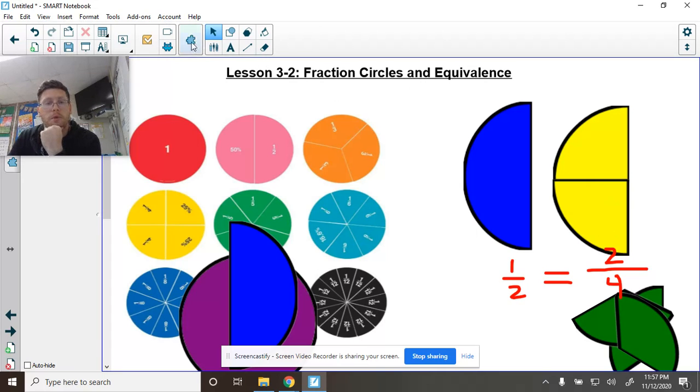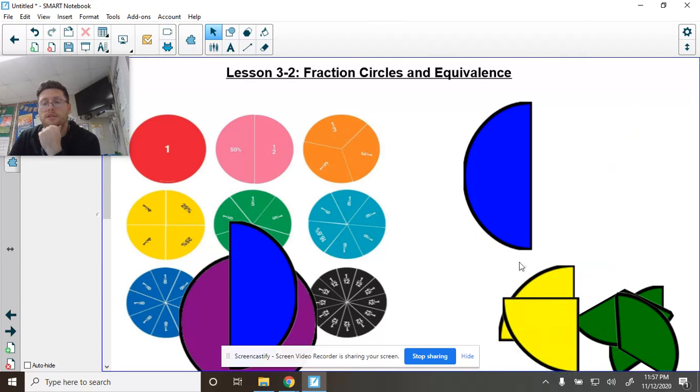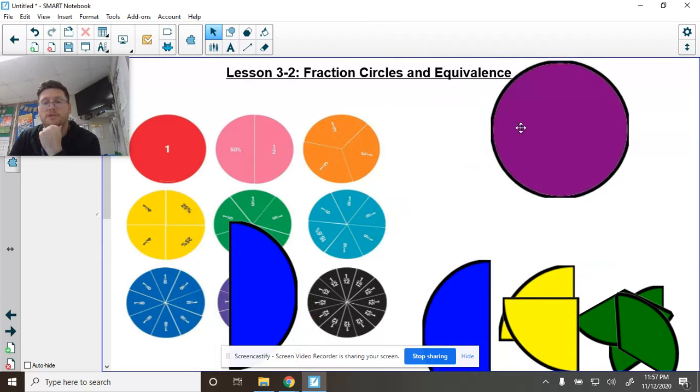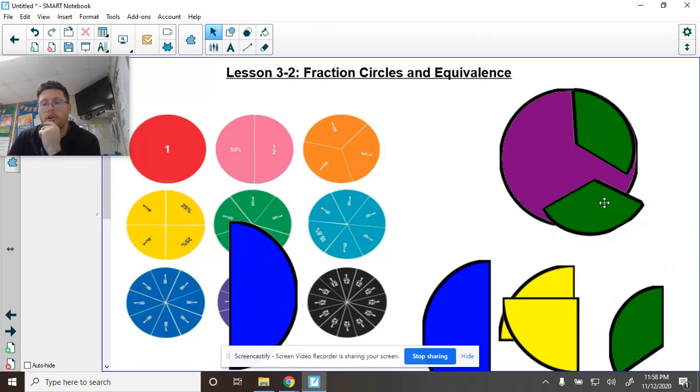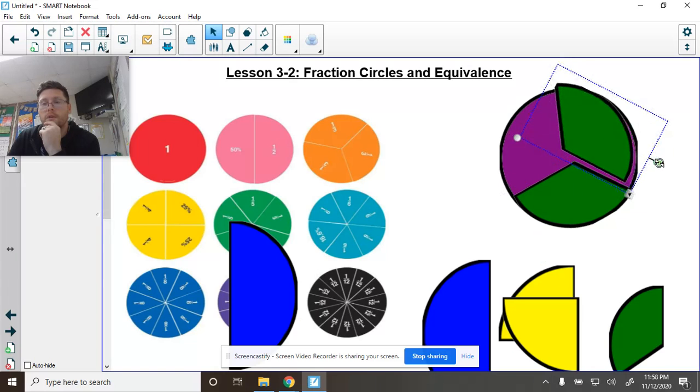And then finally, what we're going to do is we are going to look at one last one. So I move this, move that, bring my circle back. So remember I said 2 halves equals 1 whole. What about thirds? So imagine I have thirds right here. Let me make this a little bit bigger so we can put that on there.